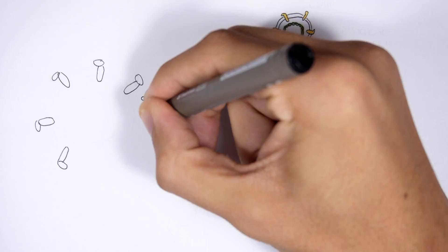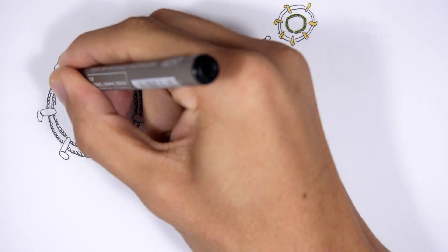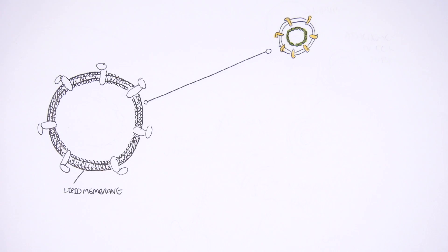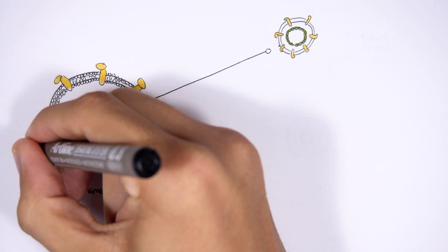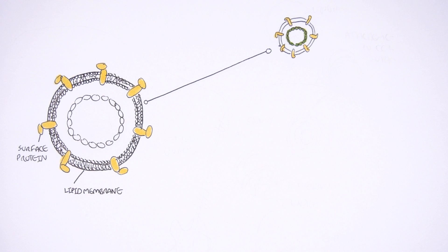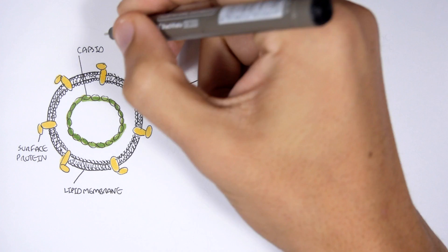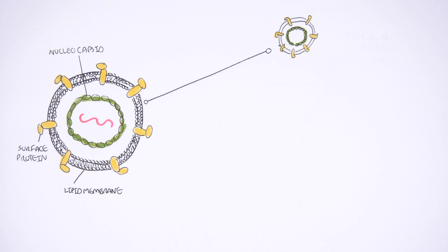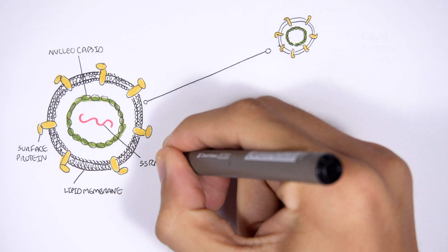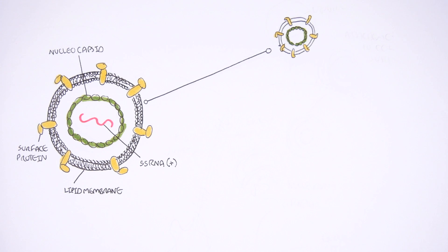Let's first look at the virus structure. Here we have the viral envelope, which is made up of a lipid bilayer just like human cells. On the envelope we have surface proteins. Within the envelope there is a protein capsule called the capsid — or in this case a nucleocapsid, because it protects the nucleotides. The capsid is protecting the genetic material, which is a positive single-stranded RNA, or positive sense RNA. We'll discuss why it is called positive later on.